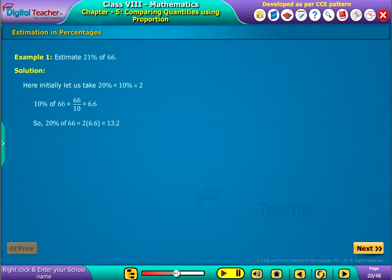Now 1 percent of 66 is equal to 0.66. Therefore 21 percent of 66 is equal to 13.2 plus 0.66, which in turn equals 13.86.